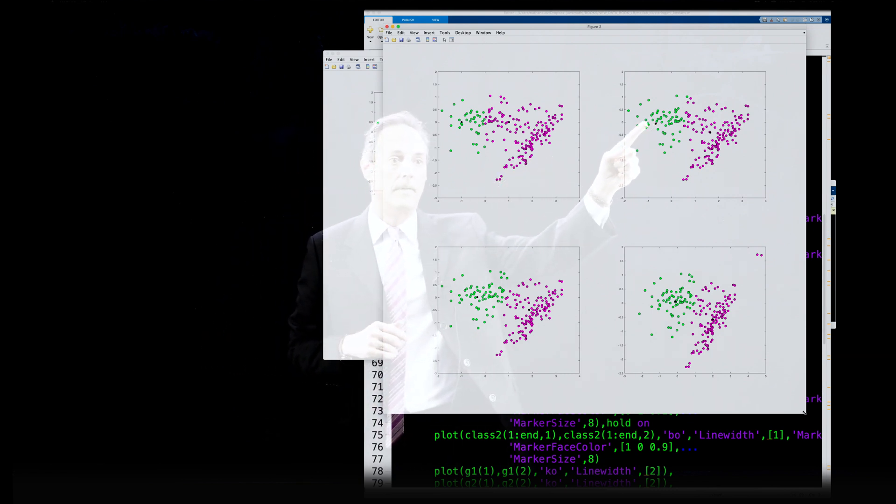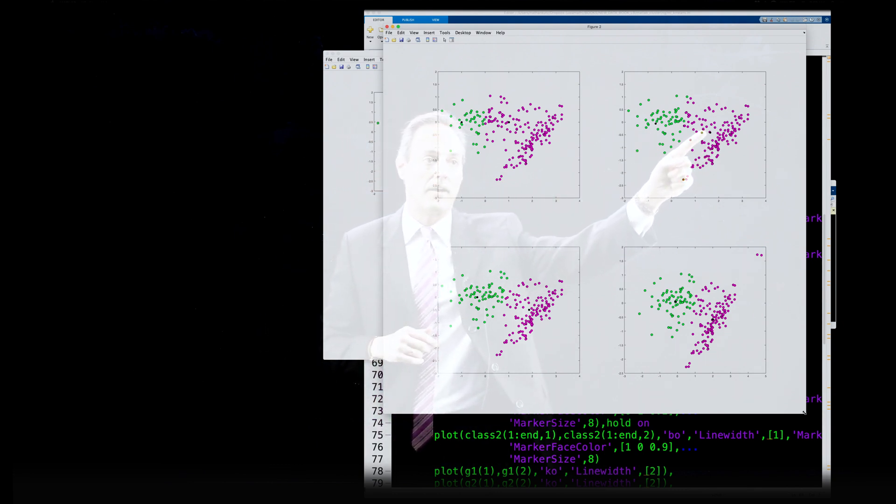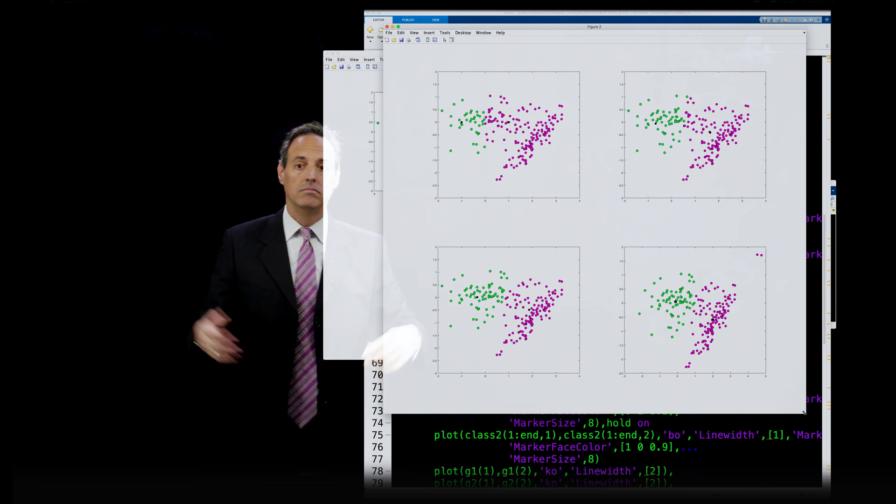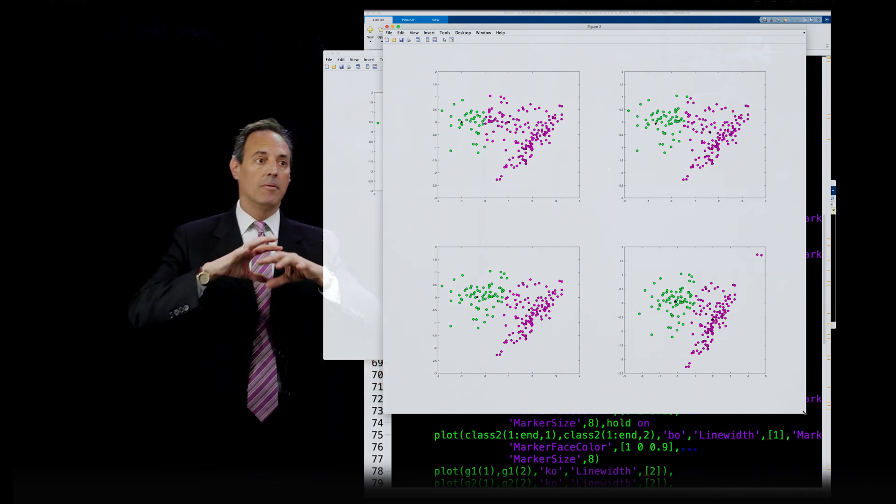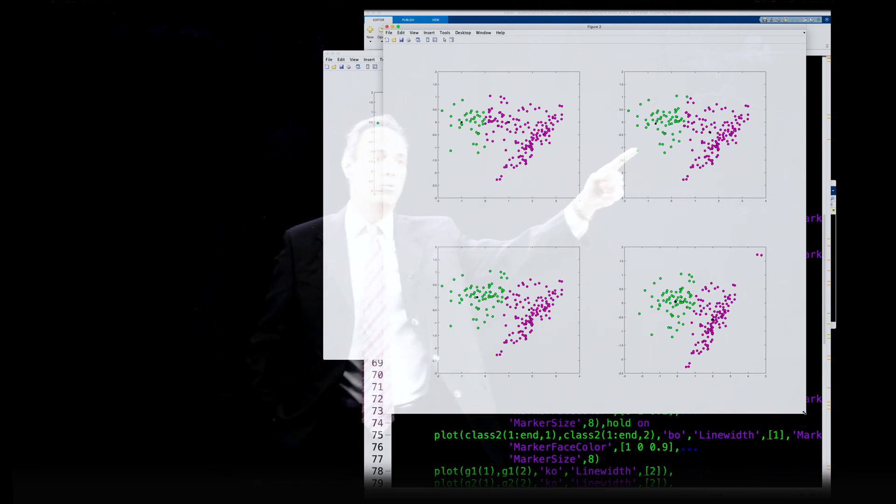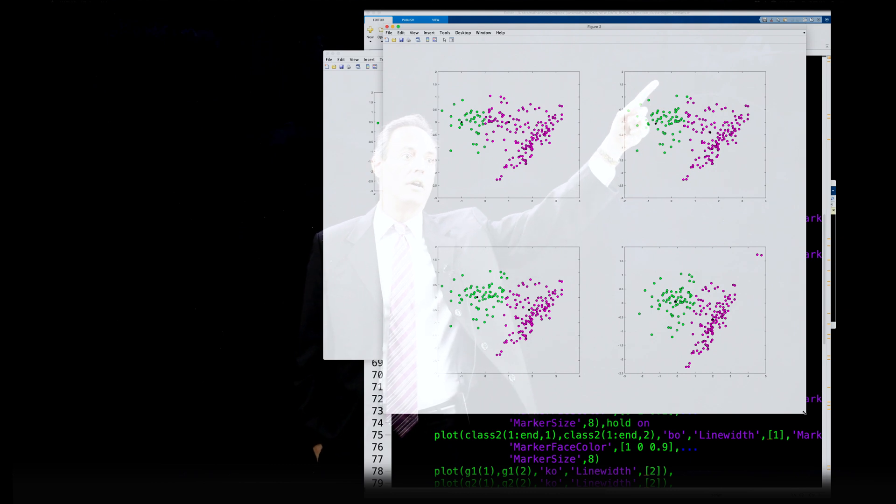Figure out where the center of mass of all this magenta is. That's that new black point right there. Now, redo the algorithm, and now notice what happens. It re-separates along this line right there. So, now you have a big green cluster, and a bigger green cluster, and a smaller magenta cluster.